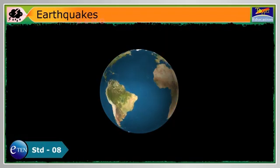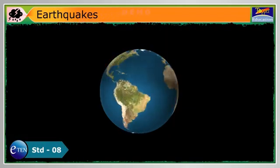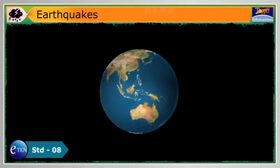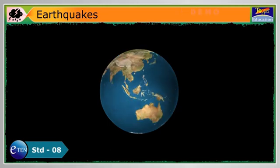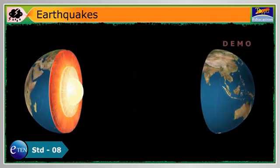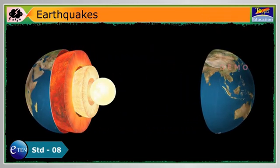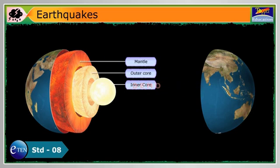It is important to understand the earth's make-up to help understand earthquakes better. The earth consists of four main layers: inner core, outer core, mantle, and crust.